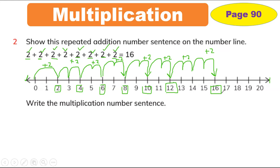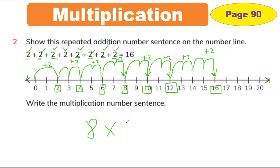So this is the repeated addition — it means you add 2 each time. Now it's time to write the multiplication number sentence. Multiplication means you use the multiply sign, like a cross. How many times did you add 2? 1, 2, 3, 4, 5, 6, 7, 8 — 8 times. Then multiply. What did you add? 2. So write: 8 × 2 = 16. That's 2 times 8, which is 16.